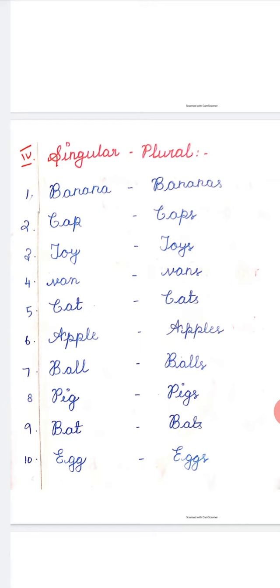First one, banana, bananas. Second one, cap, caps. Cap means one cap. Caps means more than one cap. It may be four, five, six.